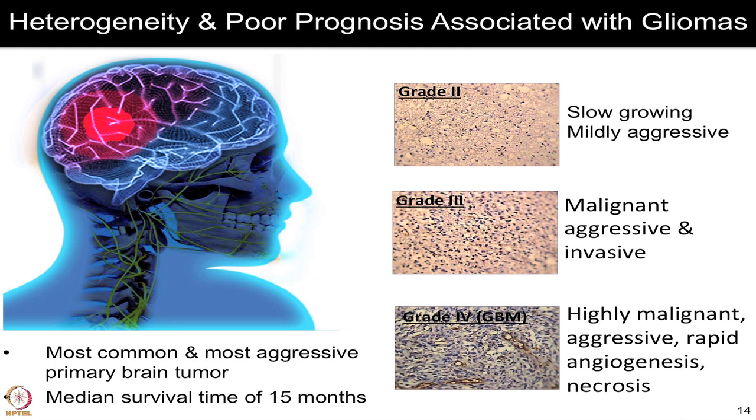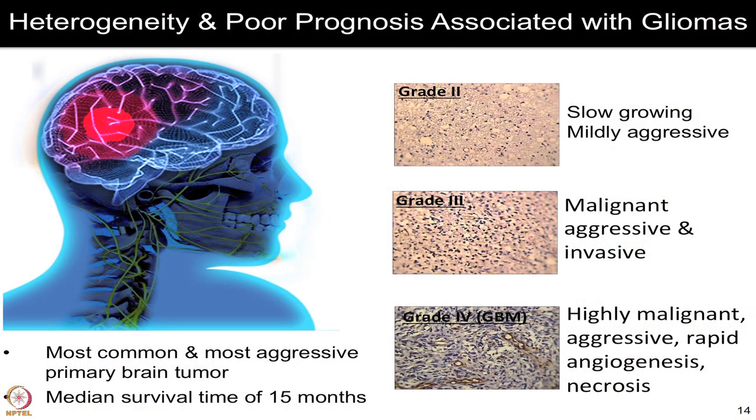Starting with gliomas, which have their origin from glial cells, patients can have low-grade or high-grade tumors. Low-grade gliomas — grade 1 and 2 — are slow-growing and mild in nature, not as aggressive as higher grades. As the disease progresses to grade 3 and grade 4, the tumors become very malignant, aggressive, and invasive. Glioblastoma multiforme, or grade 4, is highly malignant, most aggressive, and most deadly, showing rapid angiogenesis and necrosis. The median survival of these patients is sometimes only a year or 15 months. Therefore, detecting these diseases at an early stage could help better diagnosis and better therapeutic strategies.